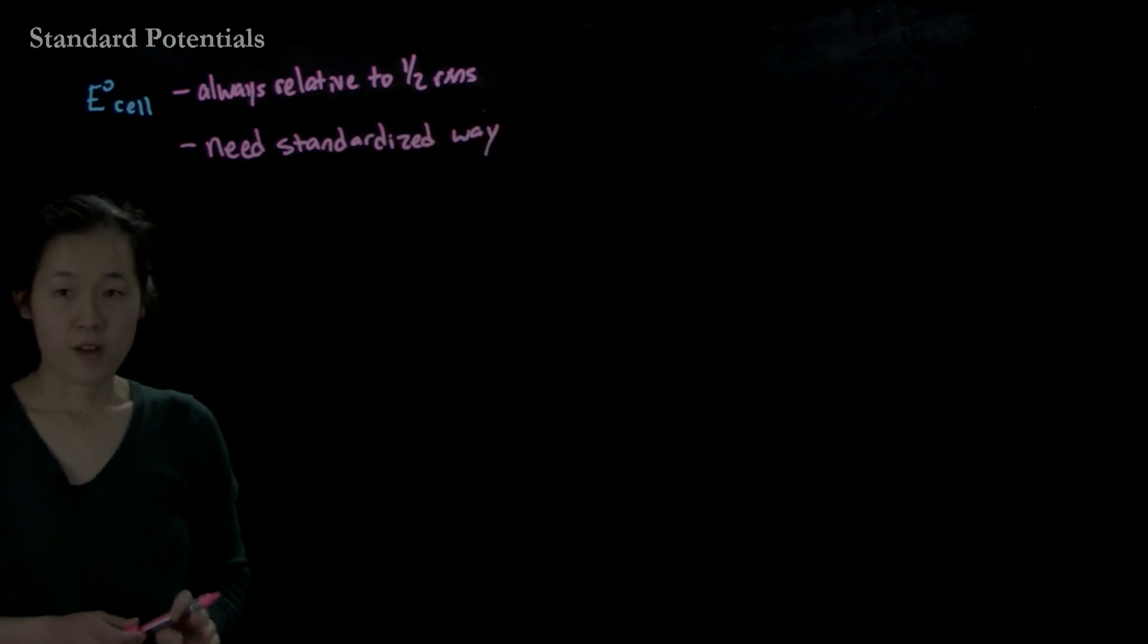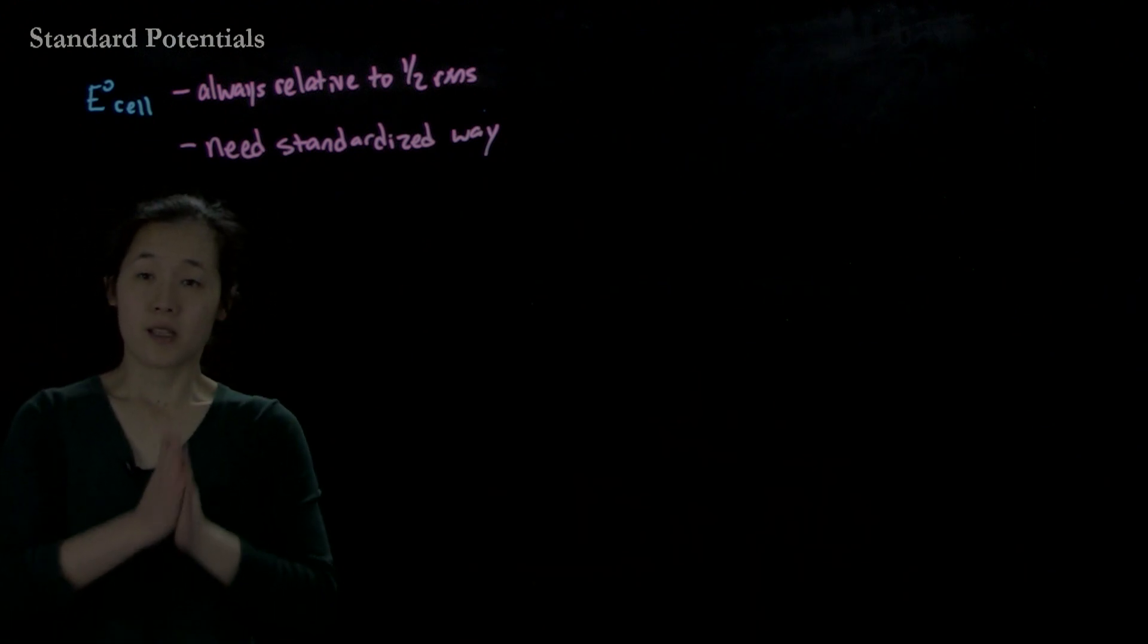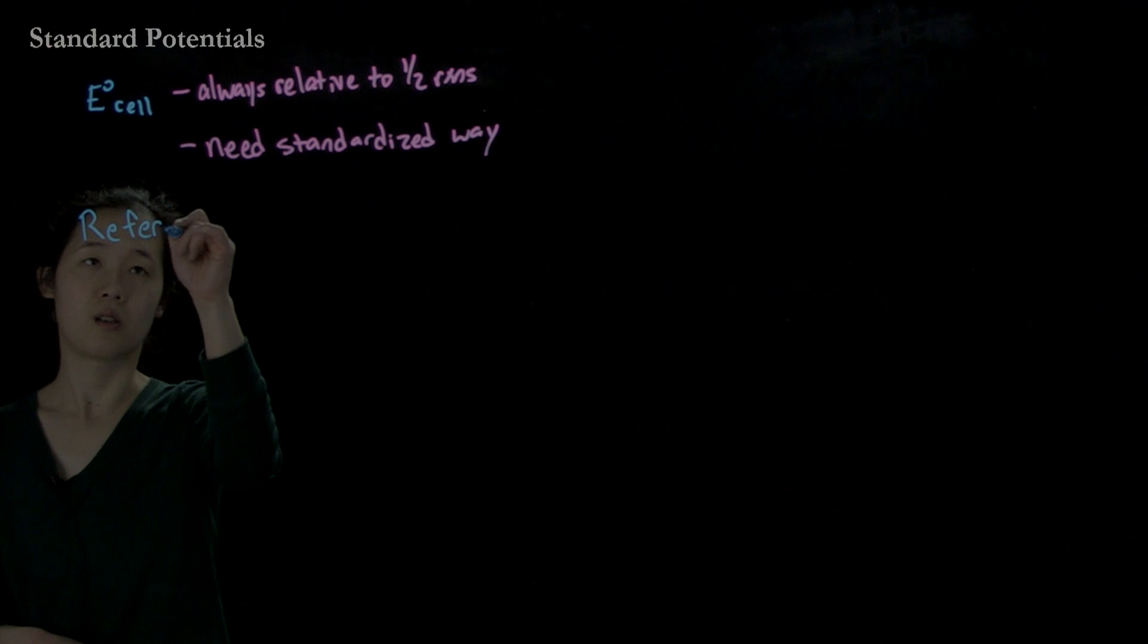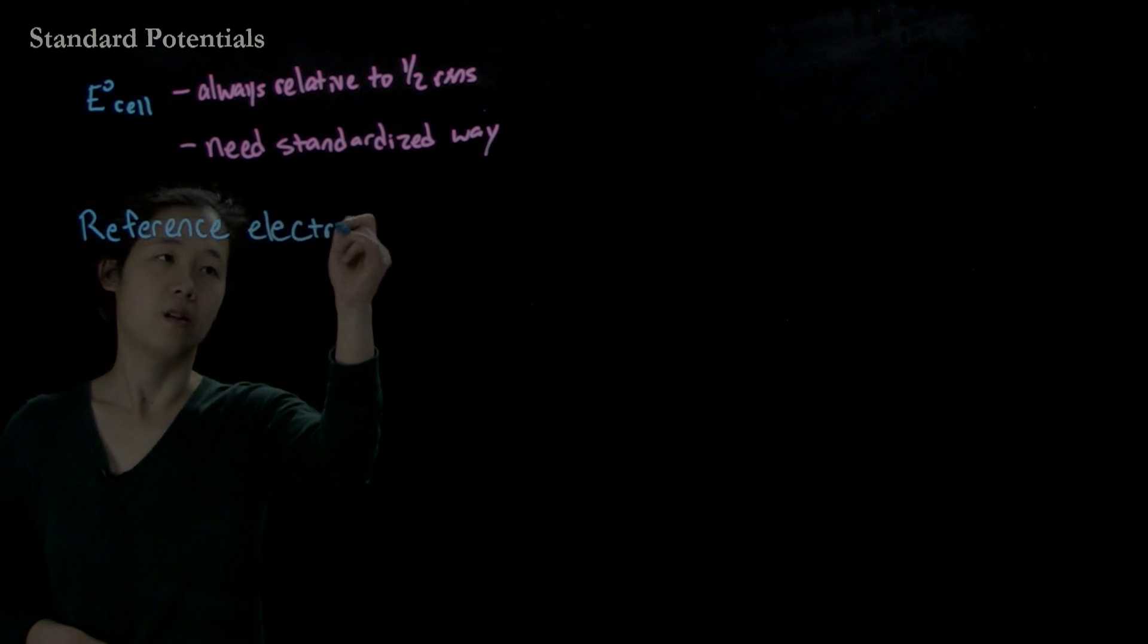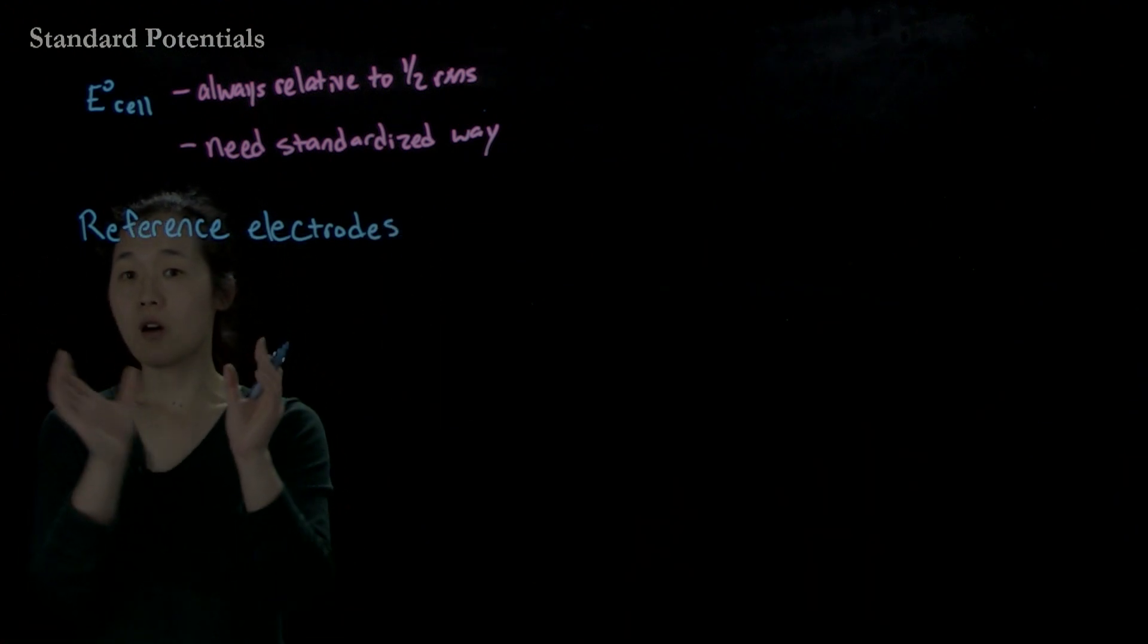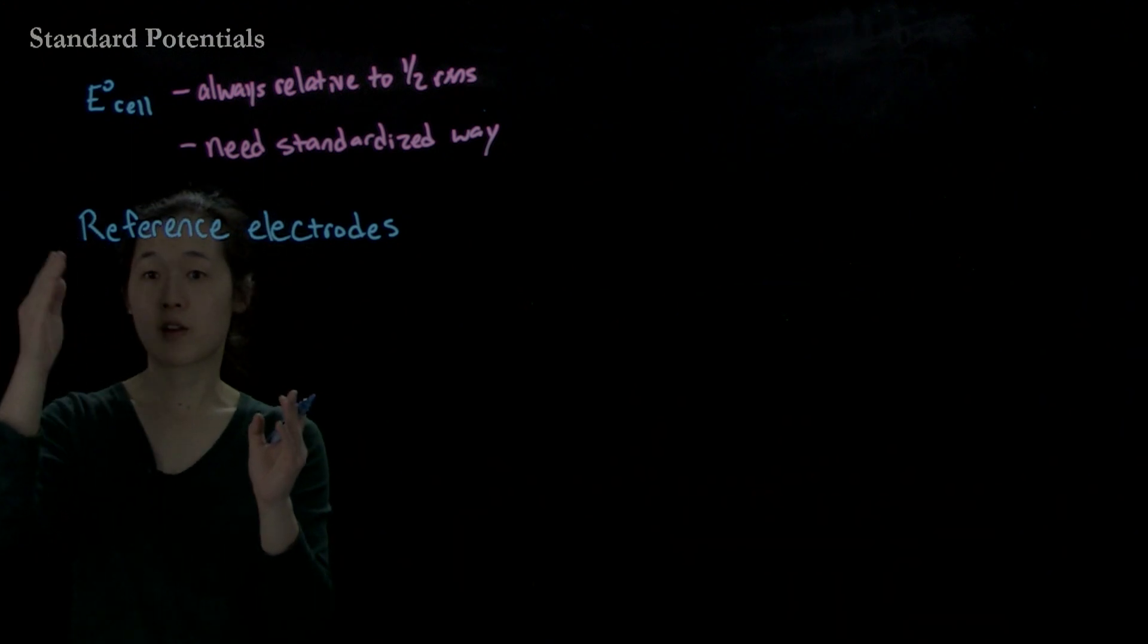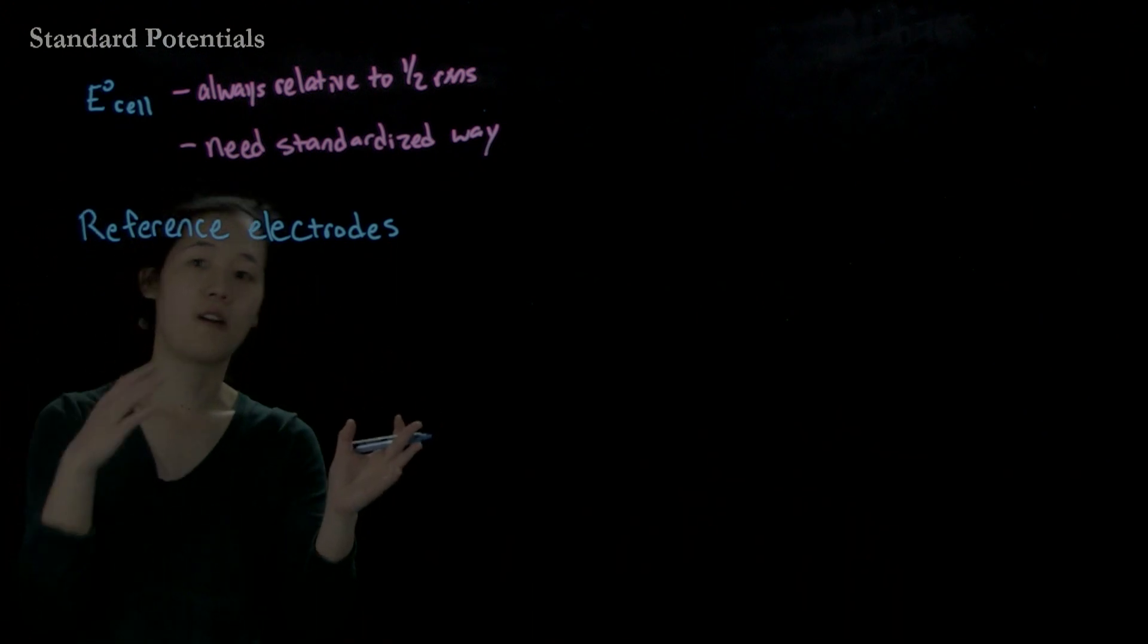The solution that people found, and by convention what everyone does, is we'll set some standard. We'll use a reference electrode, and this will be set to zero. We'll measure all chemical reactions, all half reactions, versus this reference electrode. And that's how we can measure from the E cell, then we can set that to our final potential of that half reaction.